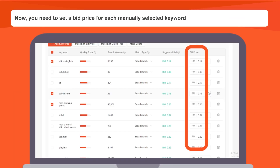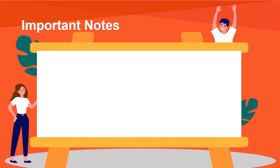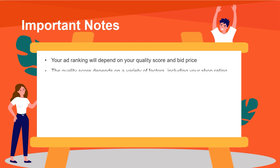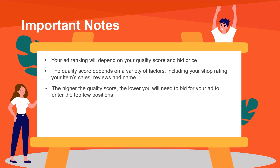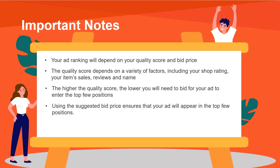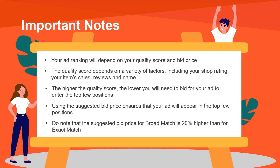Now you need to set a bid price for each manually selected keyword. Do note that your ad ranking will depend on your quality score and bid price. The quality score depends on a variety of factors, including your shop rating, your item sales, reviews, and name. The higher the quality score, the lower you will need to bid for your ad to enter the top few positions. Using the suggested bid price ensures that your ad will appear in the top few positions. Do note that the suggested bid price for broad match is 20% higher than for exact match.